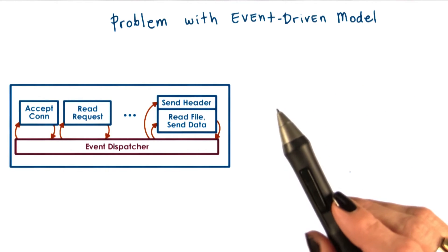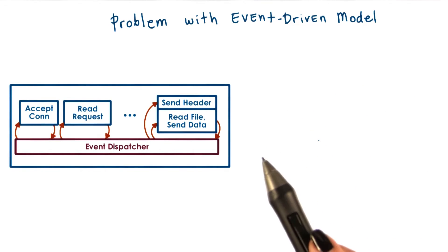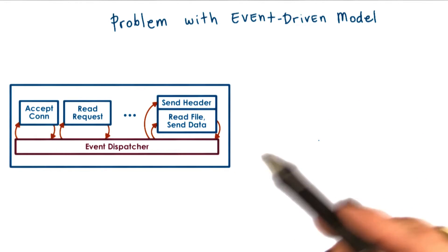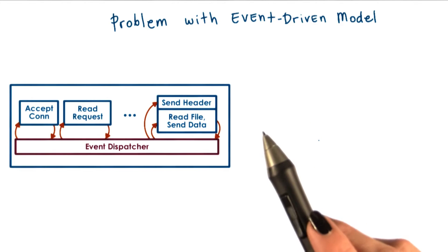The event-driven model doesn't come without any challenges. Recall that when we talked about the many-to-one multi-threading model, we said that a single blocking IO call coming from one of the user level threads can block the entire process, although there may be other user level threads that are ready to execute.